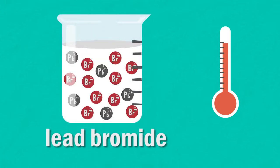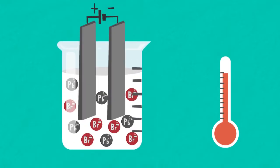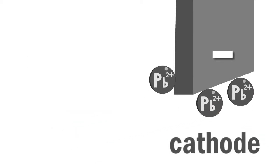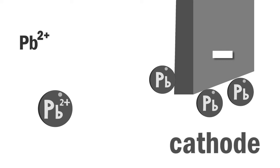When the electrodes are connected to a DC power source, the lead cations will be attracted to the negative cathode where they will gain electrons and become lead atoms. In this case, each cation requires two electrons to neutralize the 2 plus positive charge.